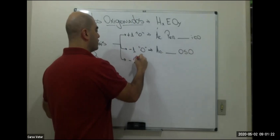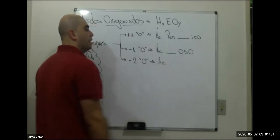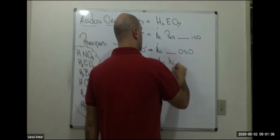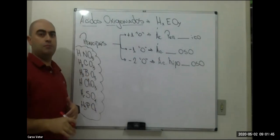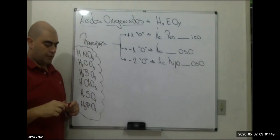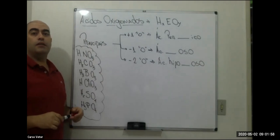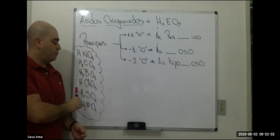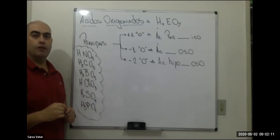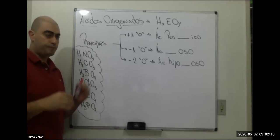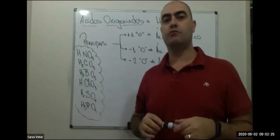Se o ácido perder dois oxigênios — ou se o que termina em '-oso' perder mais um oxigênio — esse ácido ganha um prefixo 'hipo'. O clórico é o único dos ácidos principais que faz todas as transformações: pode virar perclórico HClO4, cloroso HClO2, e hipocloroso HClO.